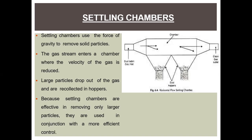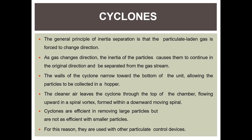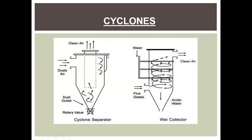The second technique is cyclones. The general principle of inertia separation is that particulate-laden gas is forced to change direction. As the gas changes direction, the inertia of the particles causes them to continue in the original direction and be separated from the gas stream. The walls of the cyclone narrow towards the bottom, allowing particles to be collected into hoppers. Cleaner air leaves the cyclone through the top, flowing upward in a spiral vortex formed within a downward-moving spiral. Cyclones are very efficient at removing large particles but not smaller ones, so they are used with other particulate control devices.